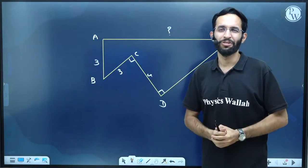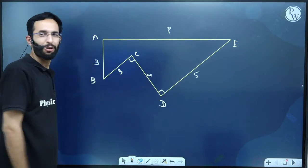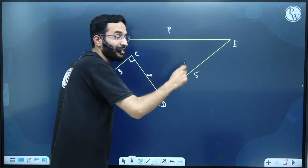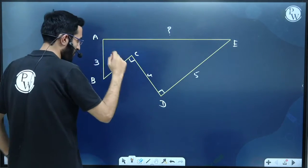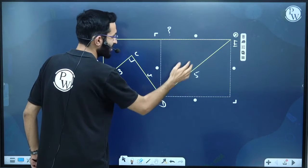You can see that BC is perpendicular to CD, and CD is perpendicular to D. If I want to use this concept, let us do one thing. Can I extend this D?